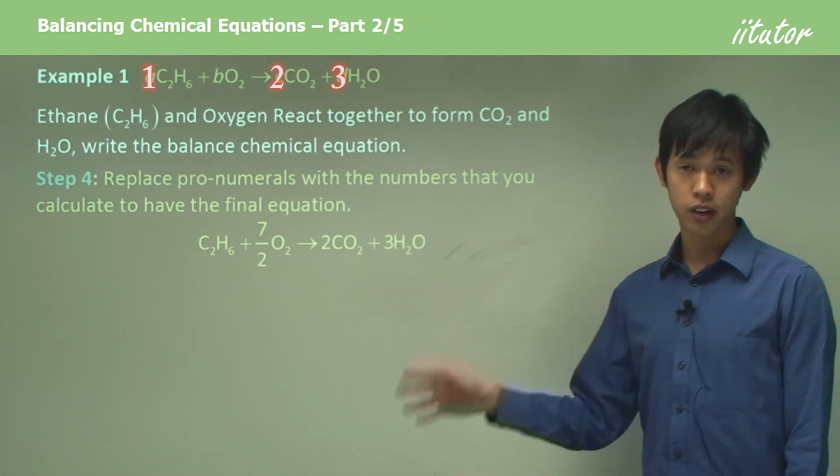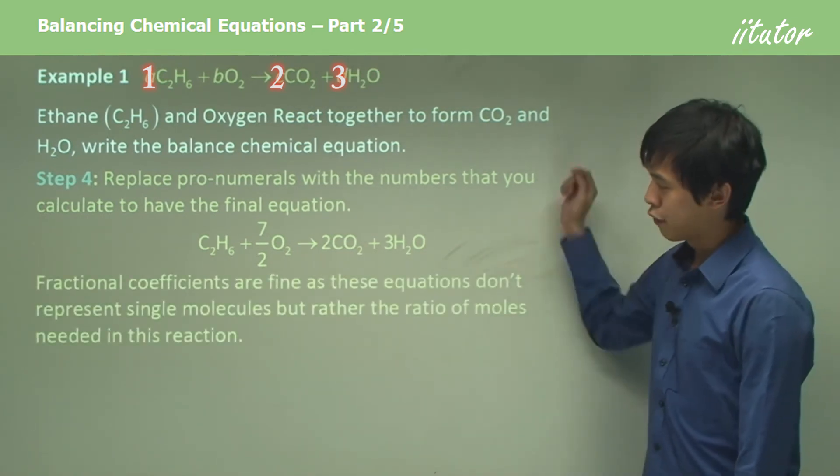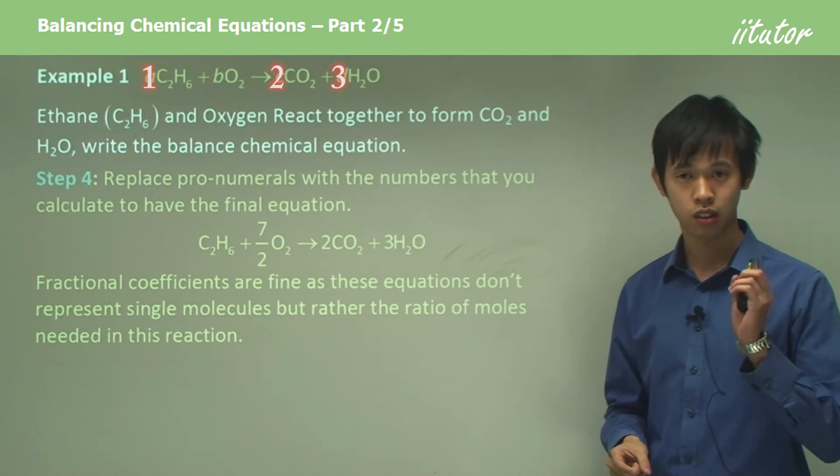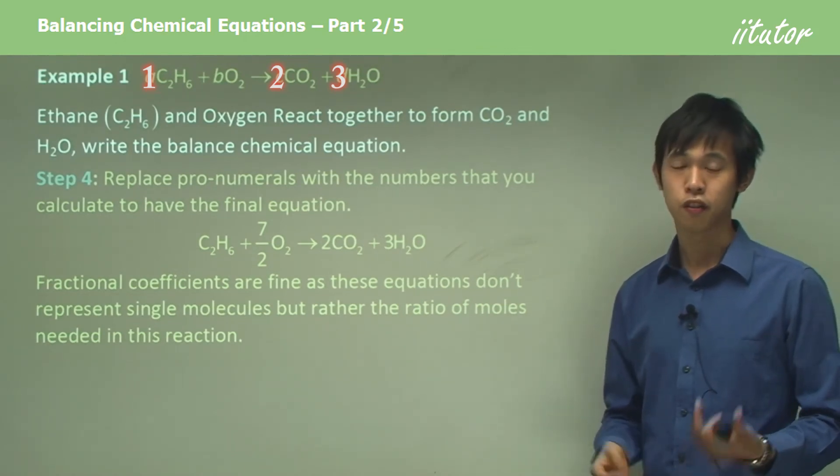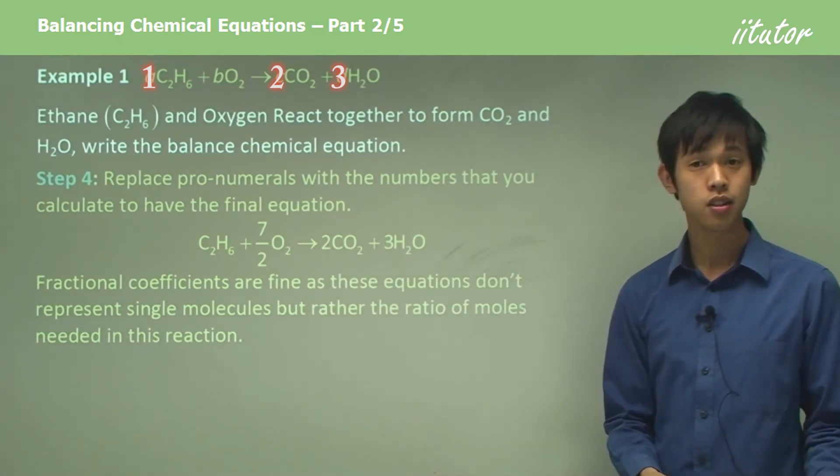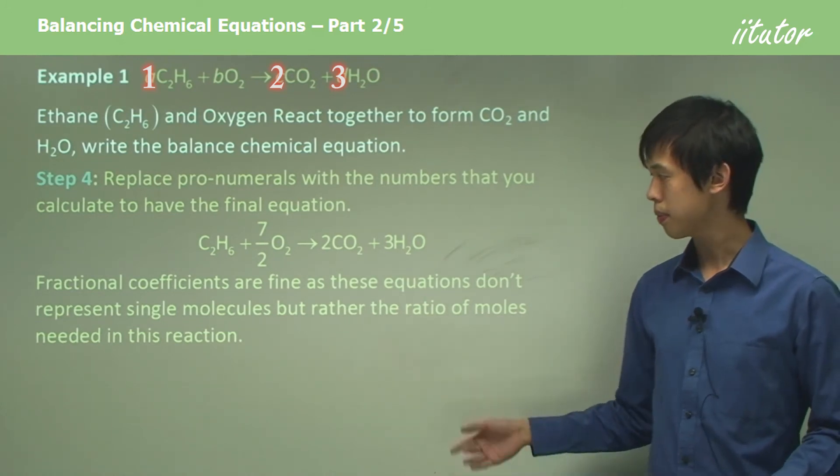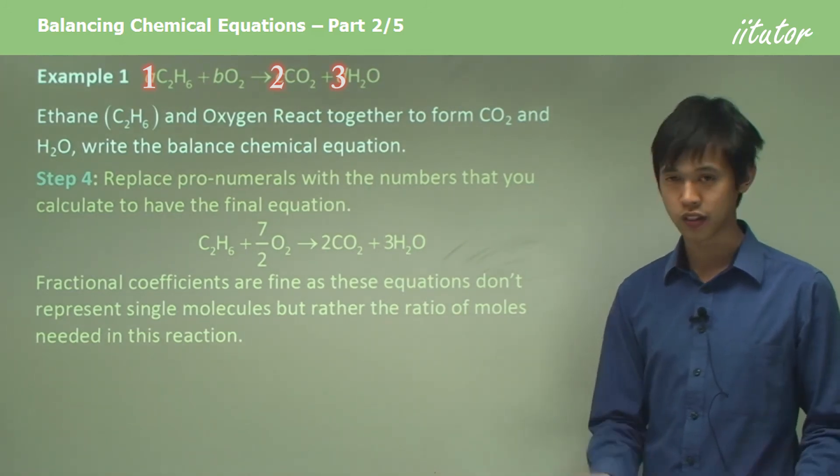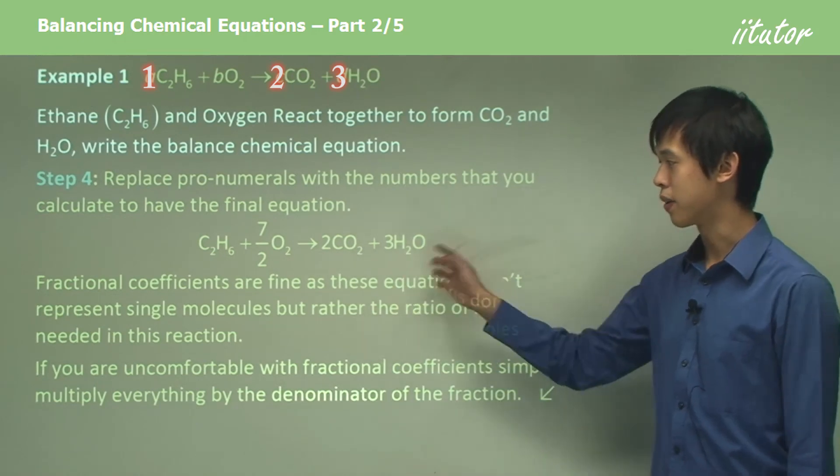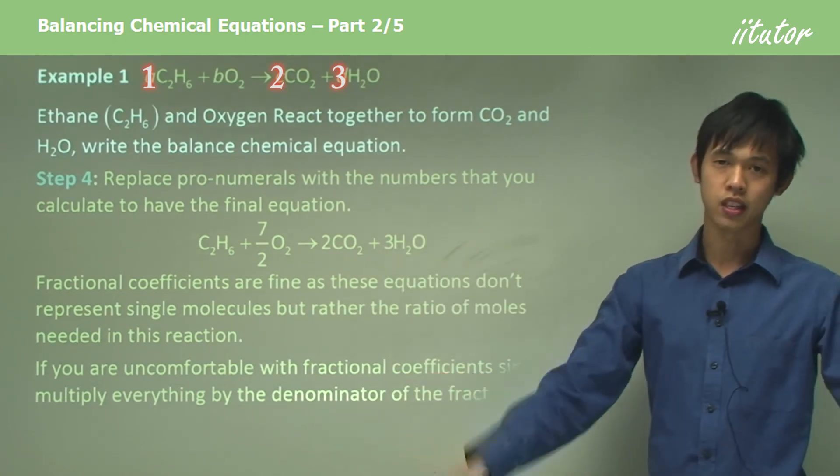Like I said, as you get better and better with this, you won't need to go through each step. You'll be able to skip steps. But right now, this is what you should do just to get a feel for it. Now if you're worried about that 7 on 2, you don't need to worry. You can have it as a fraction. Some teachers don't like it. So make sure you consult with your teacher what they prefer. But for me, I don't mind having them. Because these numbers don't mean how many molecules. They actually mean something else. They mean how many moles. And so you don't need to worry about having fractions. But, you know, talk to your teacher about it. I know lots of teachers don't like it. So if you're uncomfortable with fractional coefficients, just multiply everything by the denominator. So if I wanted to get rid of that fraction, I'd multiply this by 2, this by 2, this by 2, and this by 2. And that solves that problem.